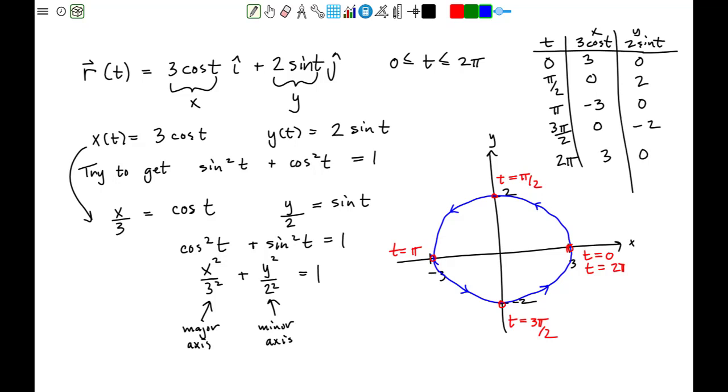We've now completed the sketch of our vector function given by 3 cosine of t i-hat and 2 sine of t j-hat.